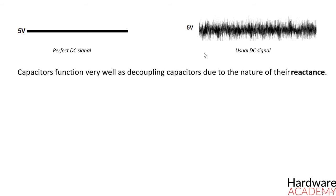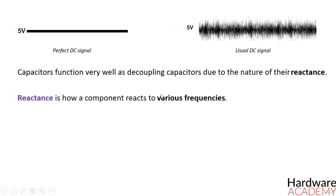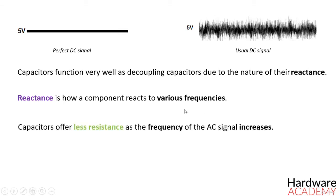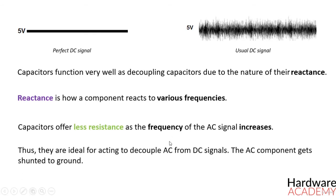Capacitors function very well as decoupling capacitors due to the nature of their reactance. Reactance is how a component reacts to various frequencies. Capacitors by nature block DC signals from passing through but allow AC signals to pass through them, since they offer less resistance to AC signals. Capacitors offer less resistance as the frequency of the AC signal increases, making them ideal for decoupling AC from DC signals. The AC component gets shunted to ground.